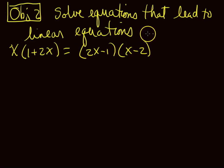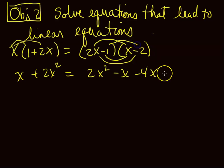Objective 2, section 1.1, solve equations that lead to linear equations. Well, what in the heck do they mean by that? The best way to look at that is by looking at an example. This doesn't look like a linear equation. In fact, when you multiply things out, distribute this, we get x plus 2x squared. We also get a 2x squared here, a negative x, a negative 4x, and a positive 2. So we got some squares here. This is no longer linear. Except, when you subtract 2x squared from both sides, you can get rid of those.